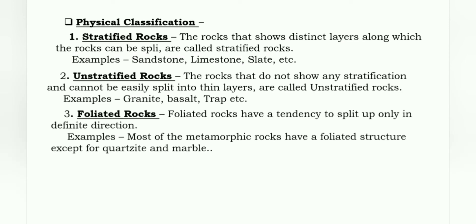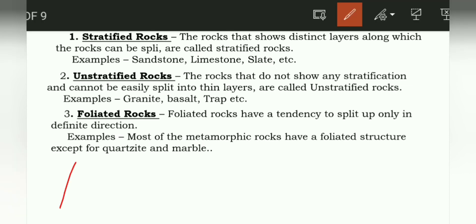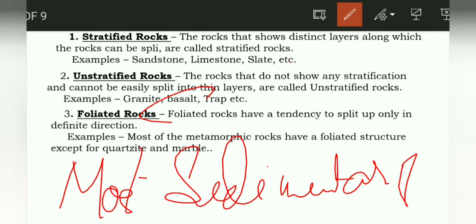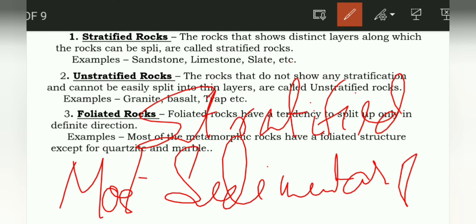Third, foliated rocks: foliated rocks have a tendency to split up only in a definite direction. Examples: most of the metamorphic rocks have a foliated structure, except for quartzite and marble. Note: most of the sedimentary rocks are stratified, and most of the metamorphic rocks are foliated.